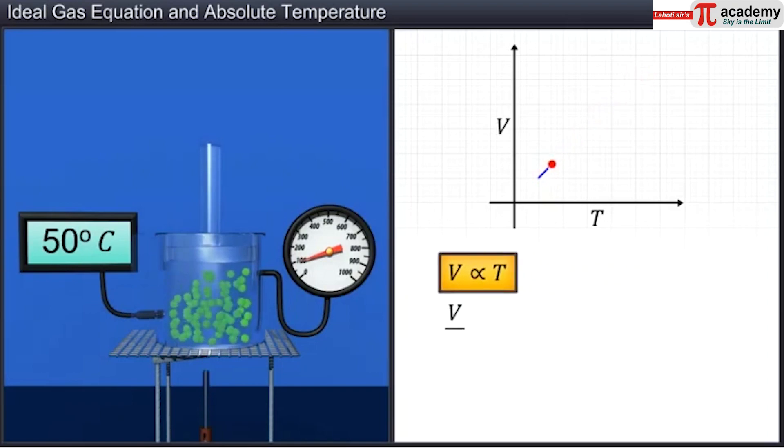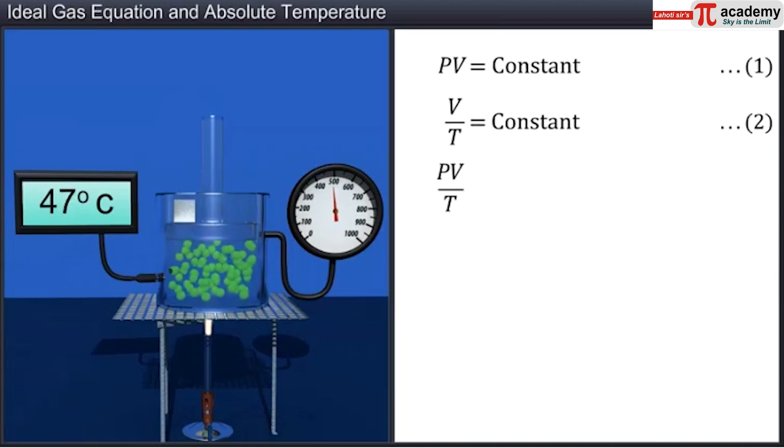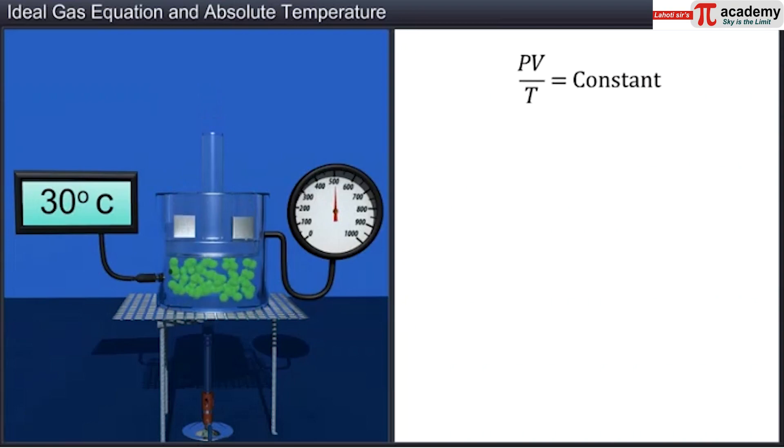Therefore, V by T is constant. On combining equations 1 and 2, we get PV by T is equal to constant. This is known as ideal gas law.